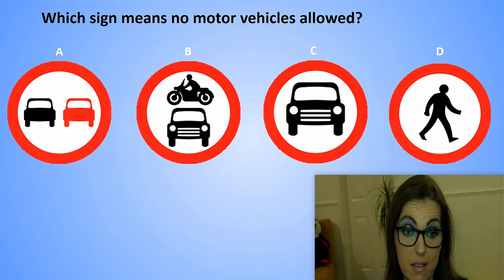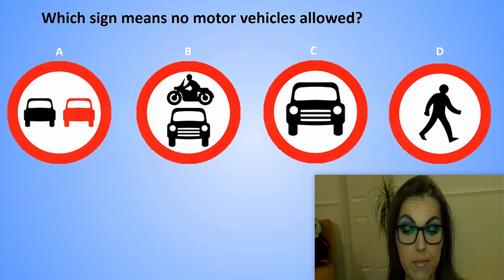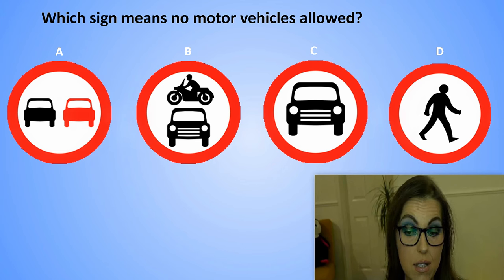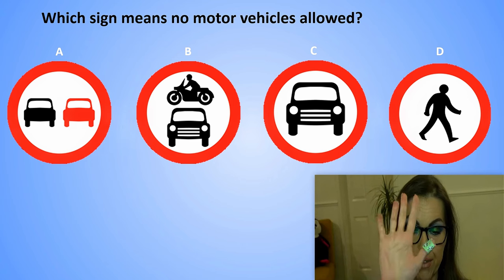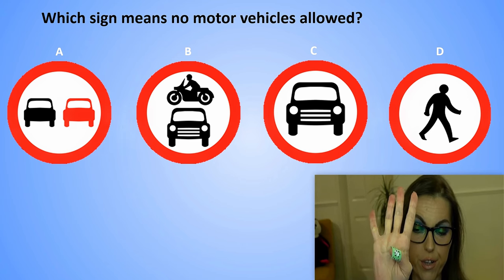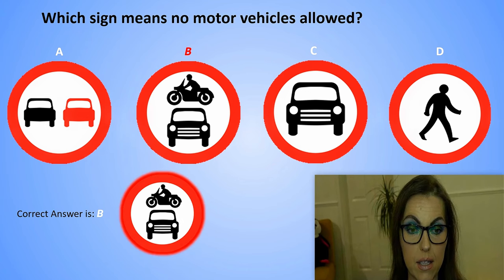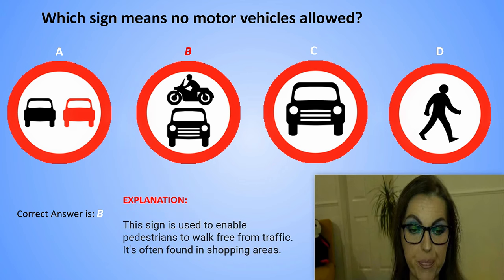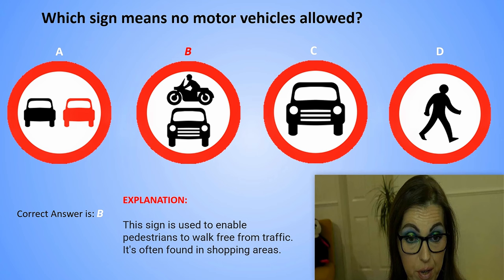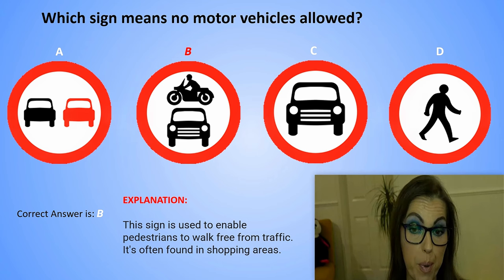Which sign means no motor vehicles allowed? Sign A, Sign B, Sign C, or Sign D? The correct answer is B. Explanation: This sign is used to enable pedestrians to walk free from traffic. It's often found in shopping areas.